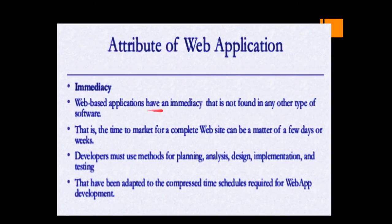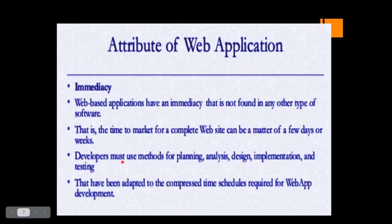The next attribute is immediacy. Web applications have an immediacy not found in any other type of software. Unlike traditional software planned over a long period, the time to market for a complete website can be a matter of days or a week. This means many people must be involved and intensive work must be done. Developers must still follow planning, analysis, design, implementation, and testing phases, but adopt a compressed time schedule to release software versions immediately when needed.